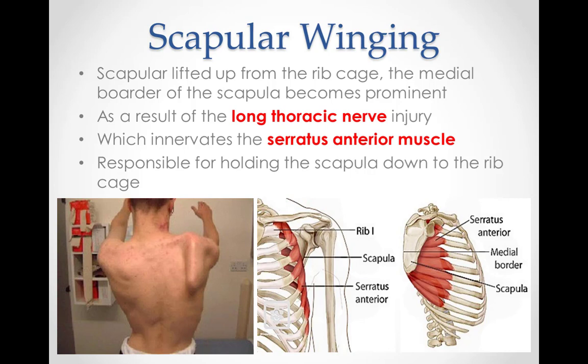If the long thoracic nerve is damaged or bruised, it can cause paralysis of the serratus anterior muscle and winging of the scapula. Damage to the nerve can be caused by contusion or blunt trauma to the shoulder, traction of the neck, and can also follow a viral illness. A full rehabilitation and strengthening program consisting of winging scapular exercises as well as a range of other exercises for the shoulder is important. The most important muscle to strengthen is the serratus anterior muscle, which holds the shoulder blade in place.